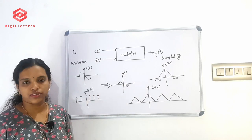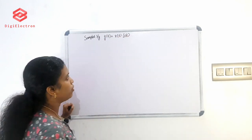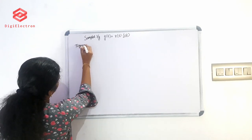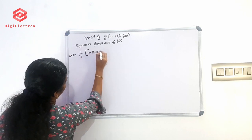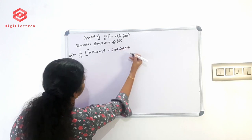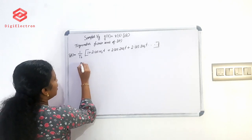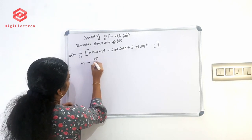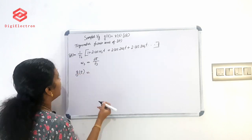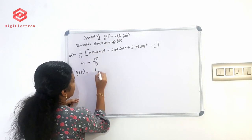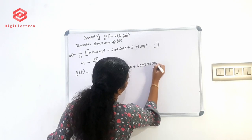This is the sampling process. The sampled signal g(t) equals x(t) multiplied by del(t). Del(t) equals 1/Ts times del(t), and del(t) can be expressed as a trigonometric Fourier series: del(t) = 1/Ts × (1 + 2cos(ωs·t) + 2cos(2ωs·t) + 2cos(3ωs·t) + ...). Therefore g(t) = x(t) × del(t), where ωs is the sampling frequency and ωs = 2π/Fs.